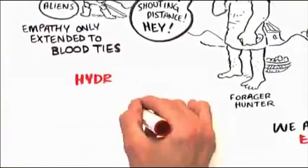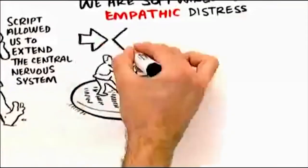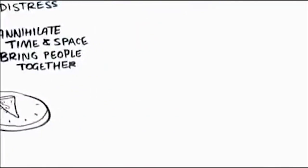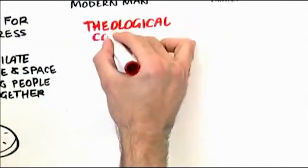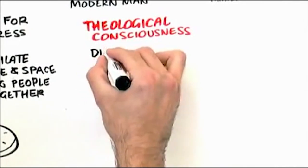When we went to the great hydraulic agricultural civilization, script allowed us to extend the central nervous system and to annihilate more time and space and bring more people together. And the differentiation of skills and the increasing selfhood not only led to theological consciousness, but empathy now extended to a new fiction.